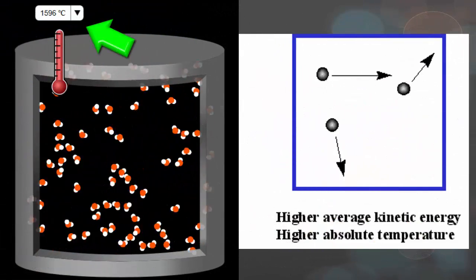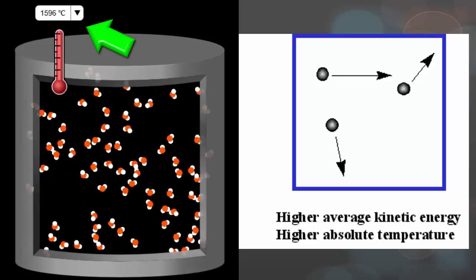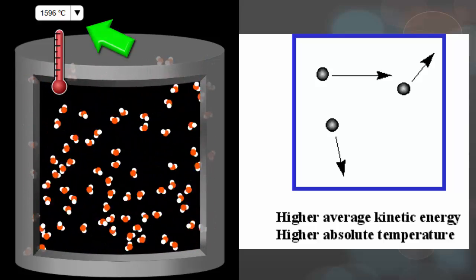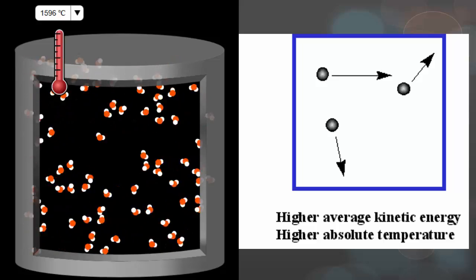On the right, you see the average kinetic energy is a little higher, and they're going to move a little faster. When they move a little faster, we assume a higher temperature.